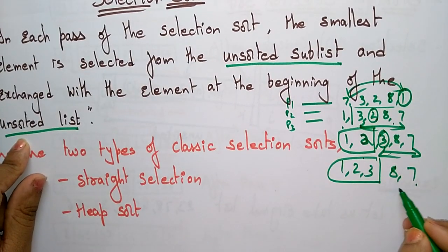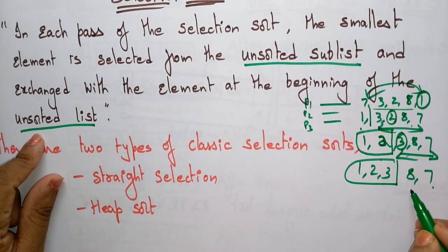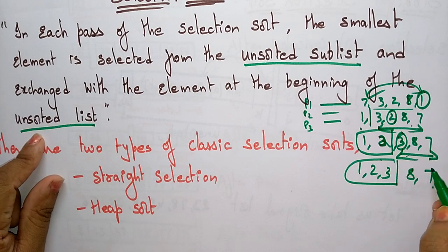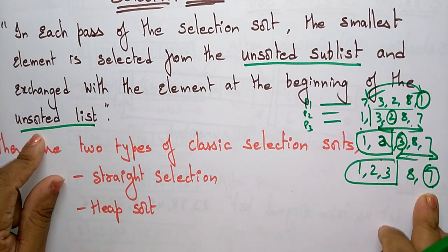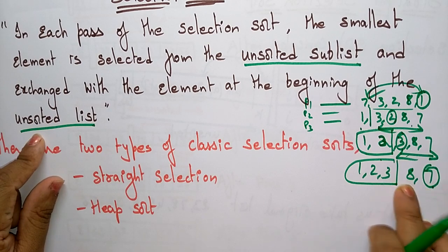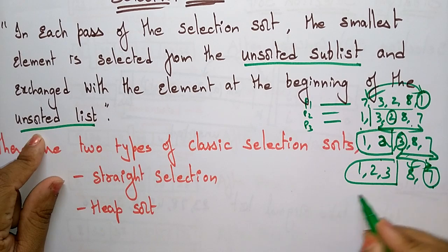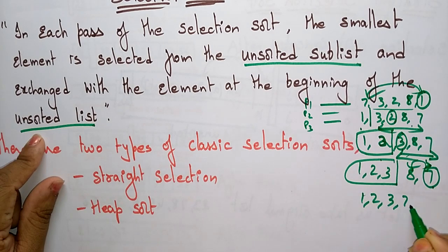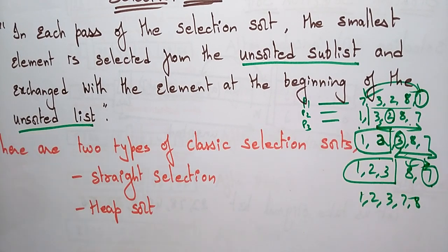Again apply the definition. The smallest element is selected from the unsorted sublist — that is 7. Exchange with the element at the beginning of the unsorted. The beginning element is 8, so just exchange it. Now the final sorted array is 1, 2, 3, 7, 8. This is the way you do the selection sort. Whenever you know the definition, you can easily apply it. You will get the sorted array.